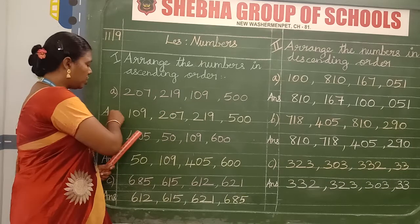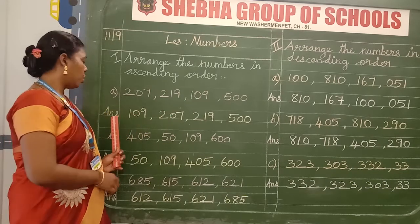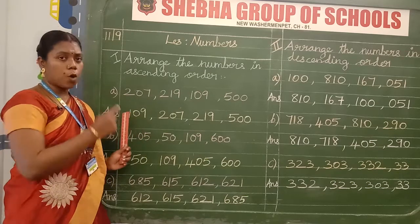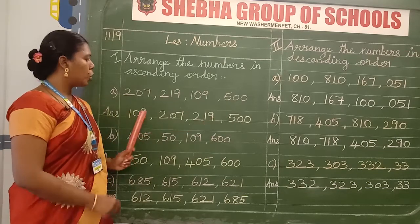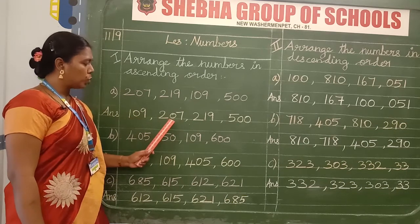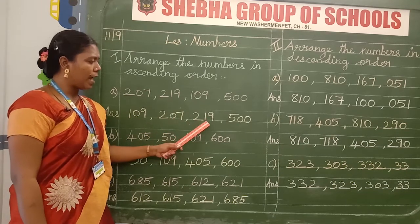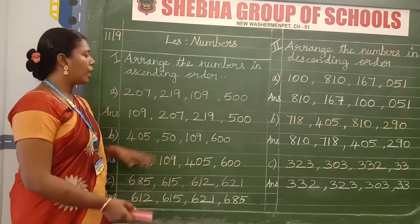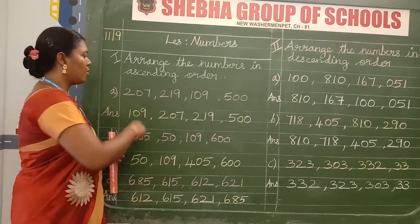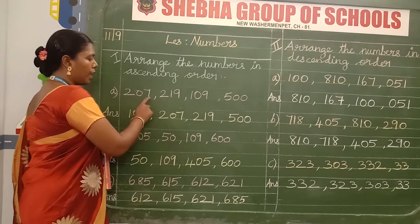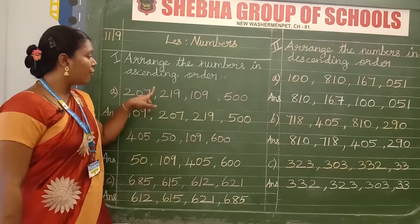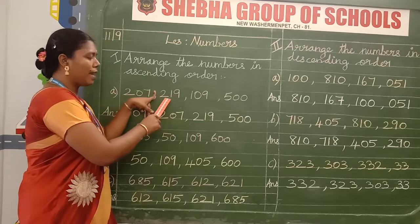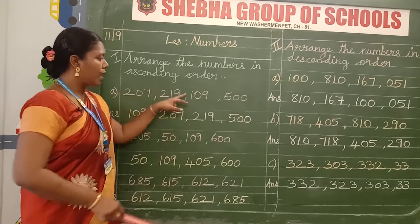207, 219, 109 and 500. This is the question for ascending order. After finishing this question, just leave the line and start the next line. Write ANS — it is the short form of answer. Write the answer from smaller number to bigger number. So you can write the numbers 109, 207, 219 and 500. This is the correct order of ascending order. Write each number using a finger gap.